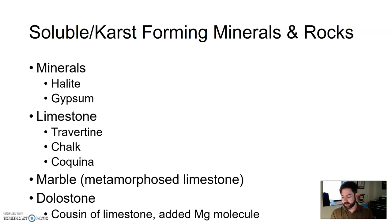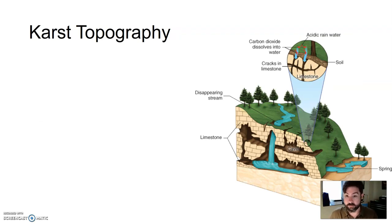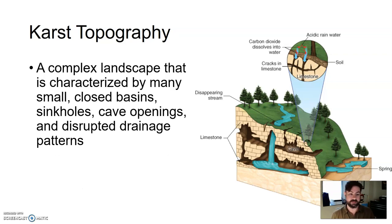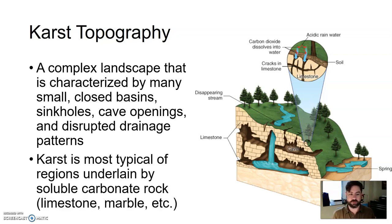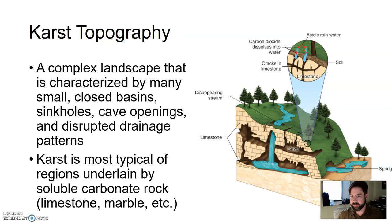When weakly acidic water interacts with these minerals and rocks, you create a type of topography called karst — karst topography. It's a very complex landscape characterized by small closed basins, sinkholes, cave and cavern openings, and unusual drainage patterns. This type of topography is most common in regions underlain by carbonate rocks like limestone and marble. You typically find karst topography with caves and caverns in areas where the bedrock is made up of limestone, marble, or those other soluble minerals and rocks mentioned.